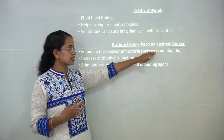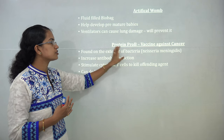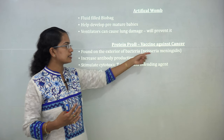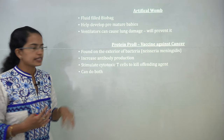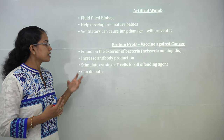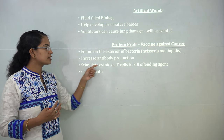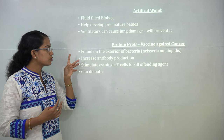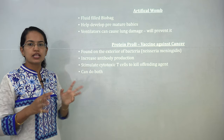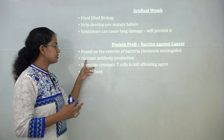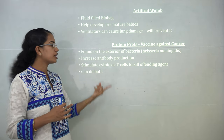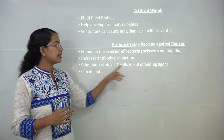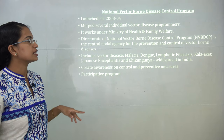A vaccine against cancer, known as protein porB, has been discovered. It is found on the exterior of the bacteria Neisseria meningitidis and increases antibiotic production. It stimulates cytotoxic T cells. Importantly, while existing vaccines can either increase antibodies or stimulate cytotoxic T cells, protein porB can do both simultaneously.